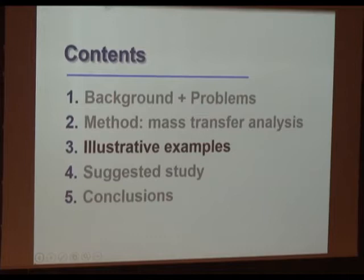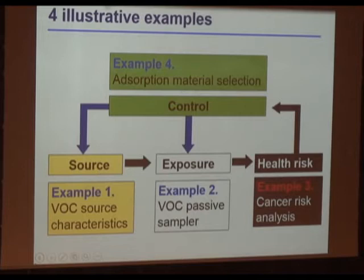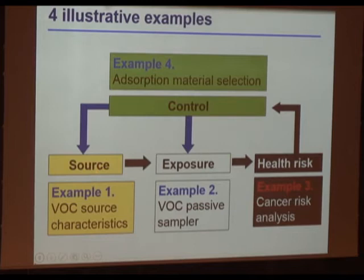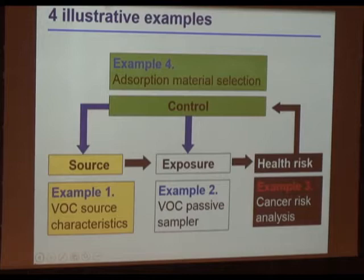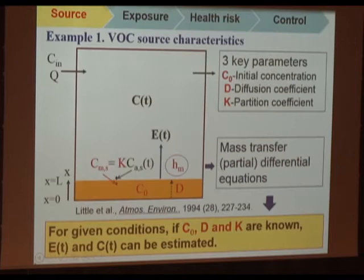The third part covers illustrative examples. From source to exposure to health risk to control, we take four examples — one for each. For source characteristics, we study VOC source characteristics. For exposure, we use VOC passive sampling. For health risk, we perform cancer risk analysis of VOCs. For the control part, we examine how to select the best adsorption material.